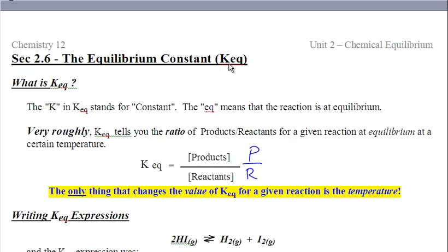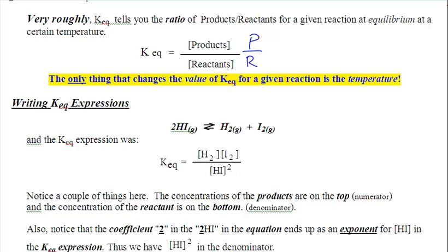Kq stands for equilibrium constant — nothing fancy. The 'eq' is the equilibrium and the 'k' means constant. We have to write out the expression for these things, figure out what it actually means, and what this constant looks like. The formula is very simple: take all the concentrations of the products divided by all the concentrations of the reactants, and you get some number, which we'll use for comparing things later on in the course.